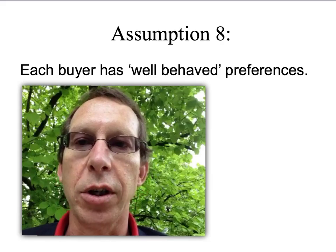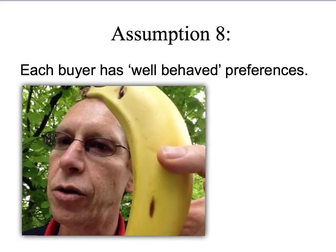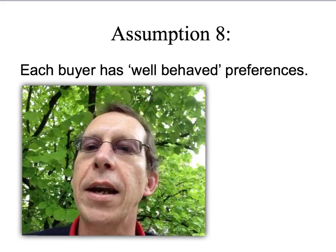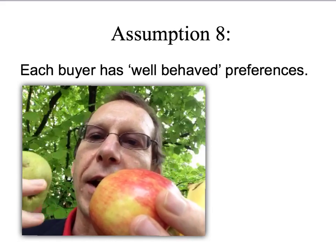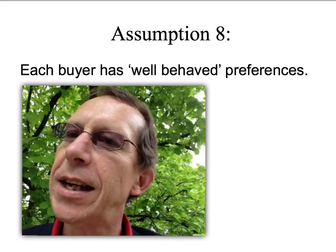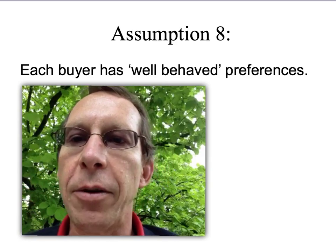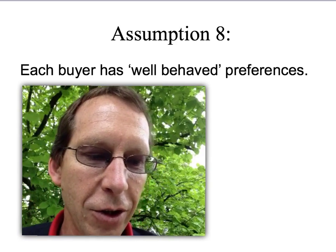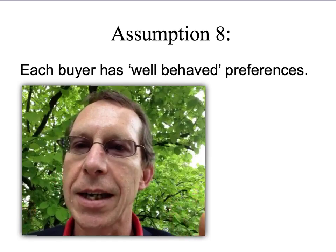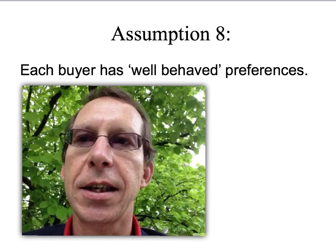What would be an inconsistent choice? When apple, peach, and banana were available, you chose the banana — showing you preferred the banana to both the apple and the peach. Now, when banana, apple, and pear are available, you've already shown you prefer the banana to the apple. But if you suddenly said you'd have the apple, that would be an inconsistent choice. This is called the weak axiom of revealed preference — a long name but a very simple idea. For now, just think of it as saying buyers must make consistent choices.